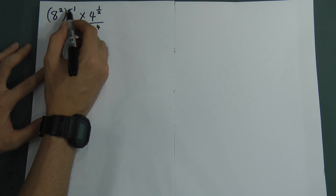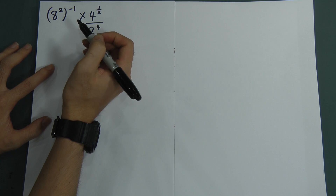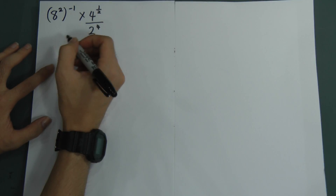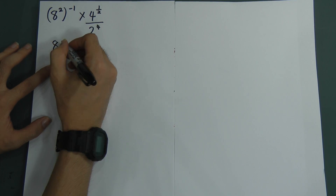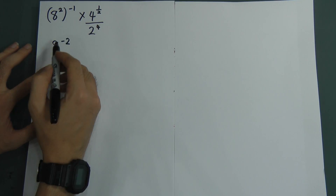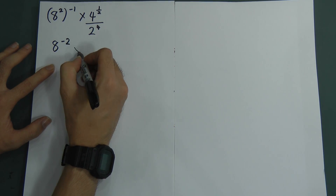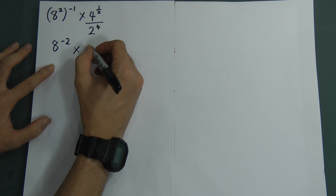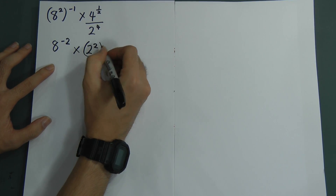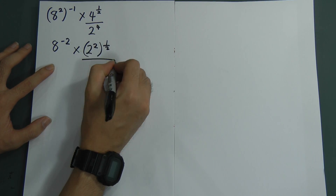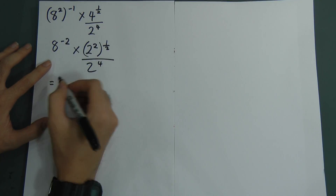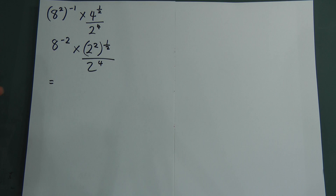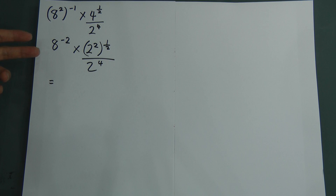So now, whenever you see a bracket like this, you have to know that the 2 has to multiply by negative 1. So let me multiply first. This one I will get 8 to the power of negative 2, because 2 multiplied by negative 1 gives negative 2. Okay, this one — 4 — I can change to 2 to the power of 2, to the power of one half, divided by 2 to the power of 4.